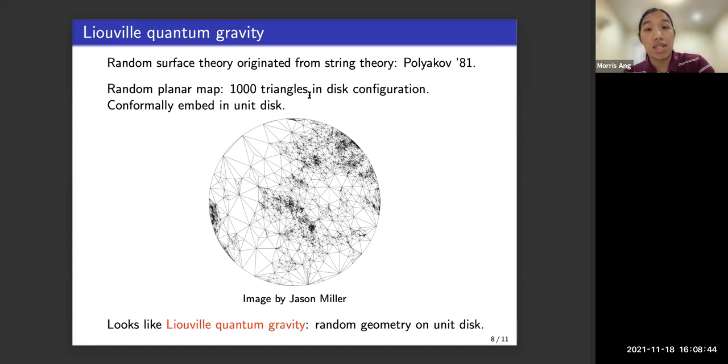So concretely, let's say you have 1,000 triangles, and you assemble them randomly into a disk configuration. And that gives us something called a random planar map. Now you can do something called a conformal embedding to embed this random planar map in the unit disk. So here is a simulation.